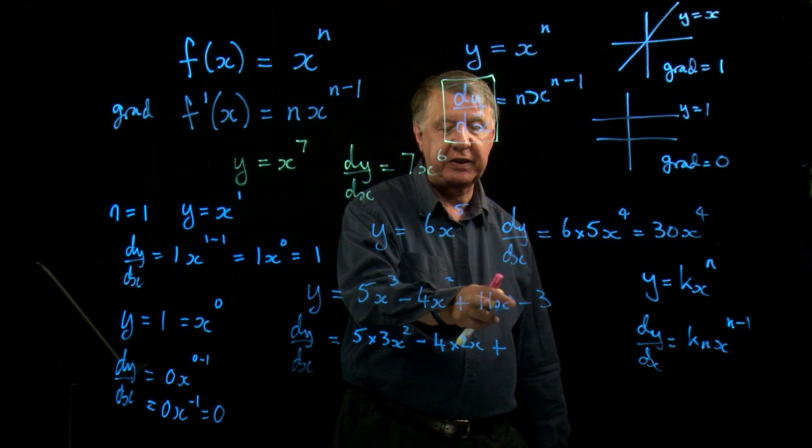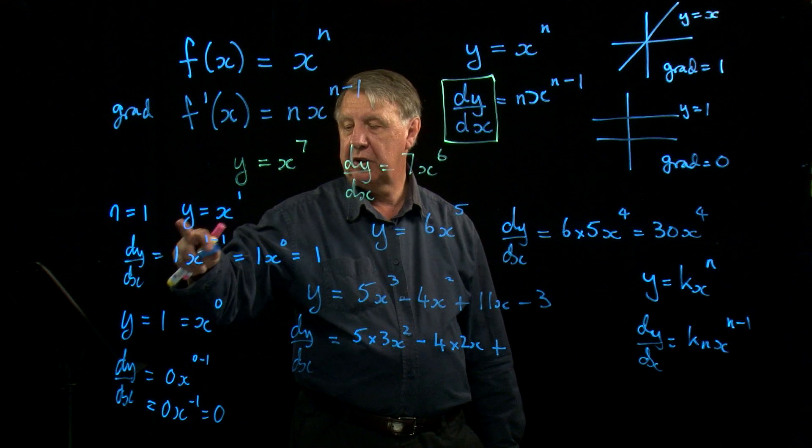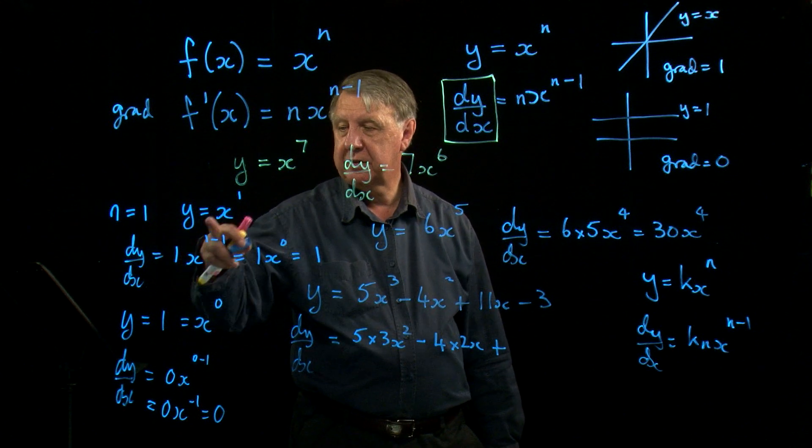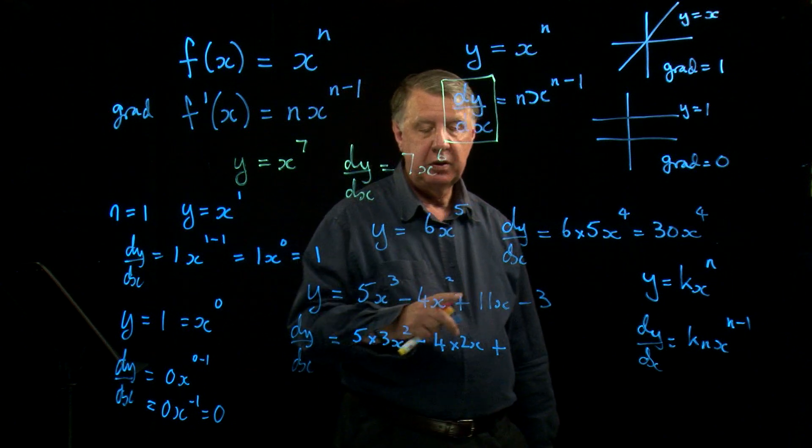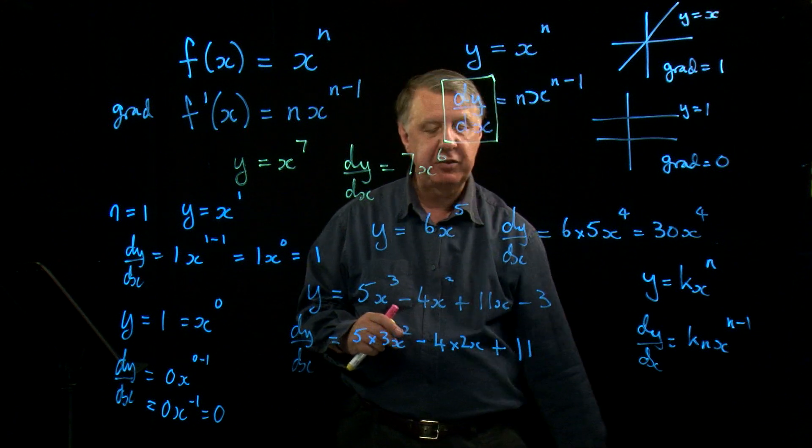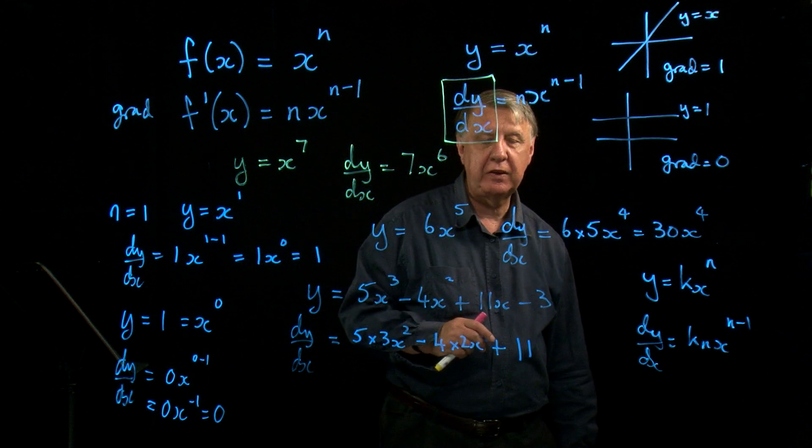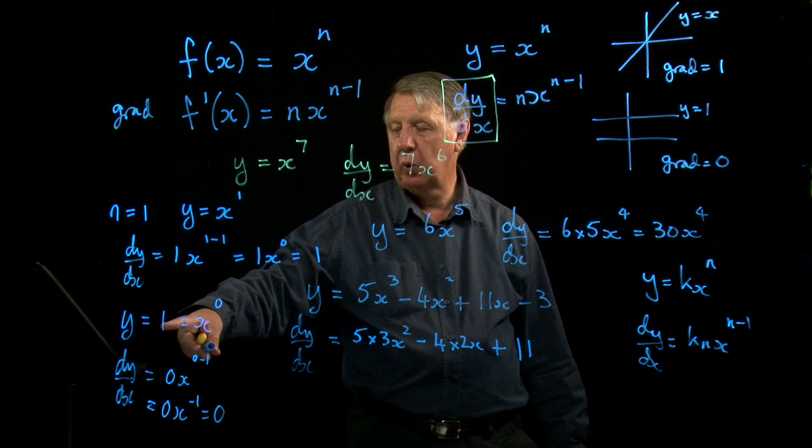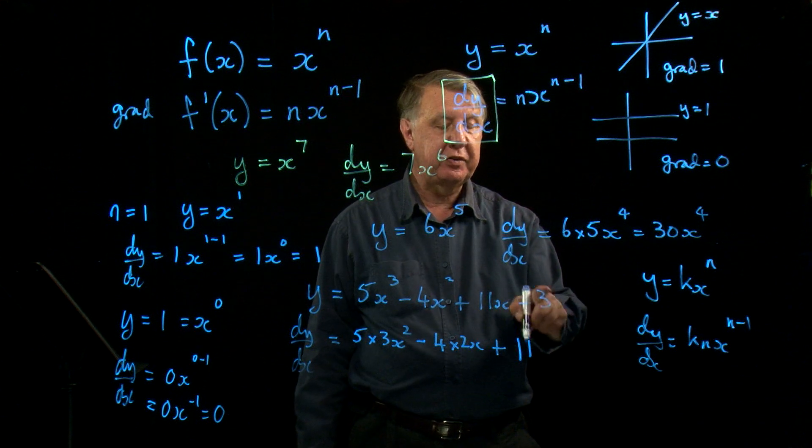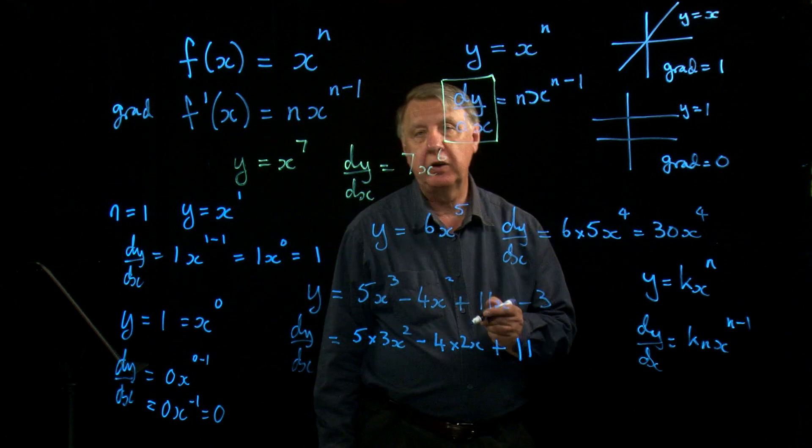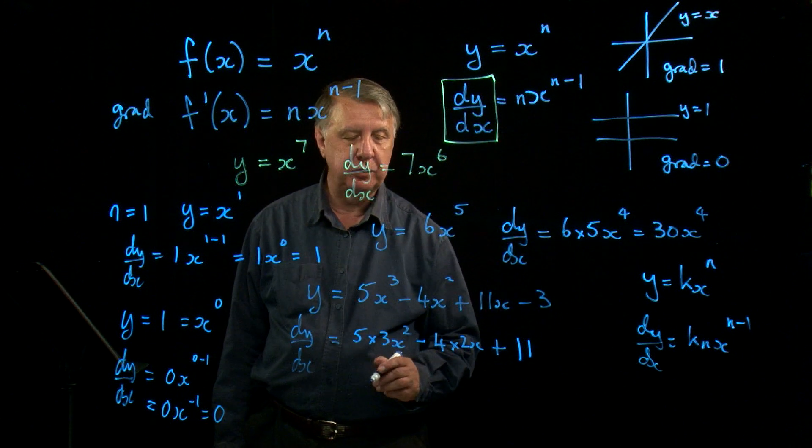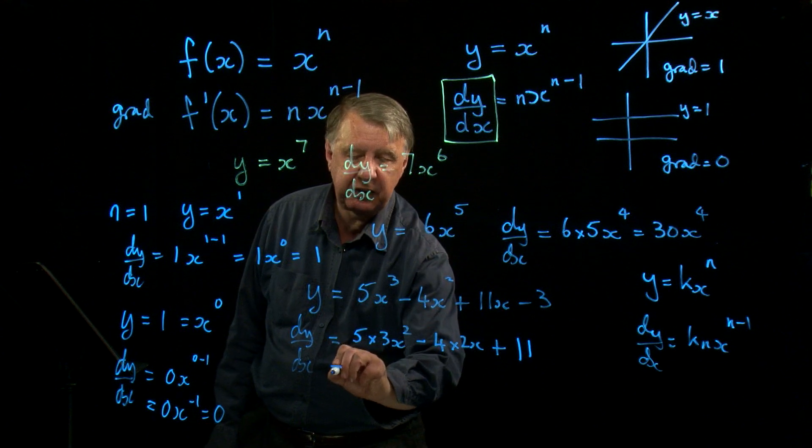Because 11x, again, is a straight line. And if I differentiated 1x, I had ended up with 1. So if I differentiate 11x, I'll end up with 11. And then finally, if I differentiated 1, I had an answer of 0. Well, negative 3 will still be a horizontal line. So if I differentiate it, that will also be 0. So I don't even need to write anything down there at all. You always tidy this up at the end. You mustn't leave the answer like that.